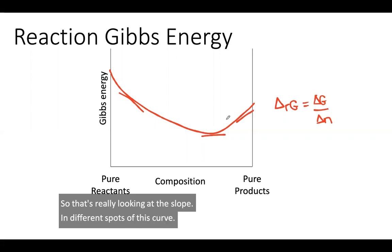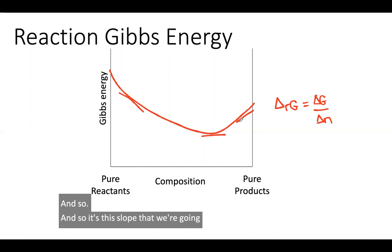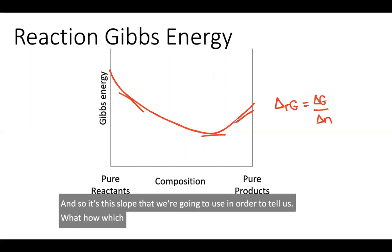And so it's this slope that we're going to use in order to tell us in which direction is the reaction going to occur spontaneously.